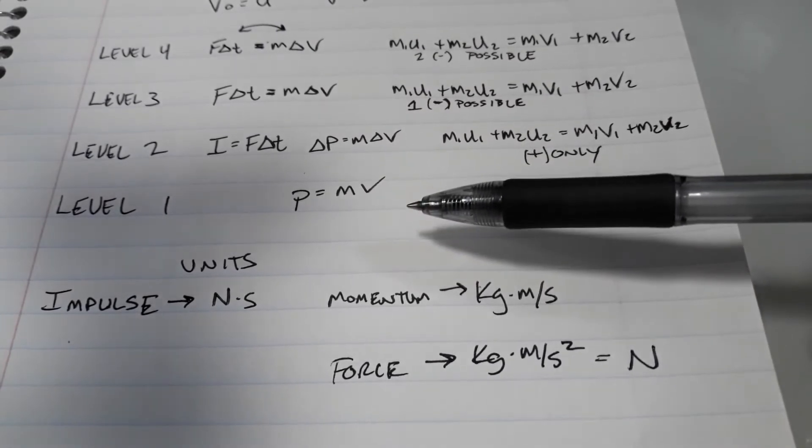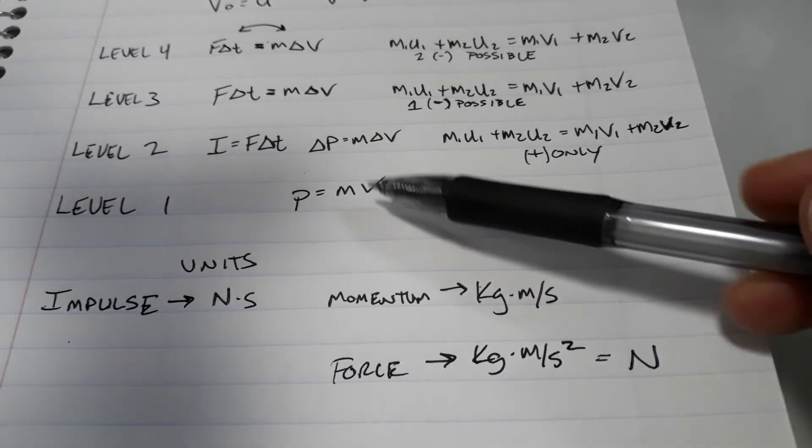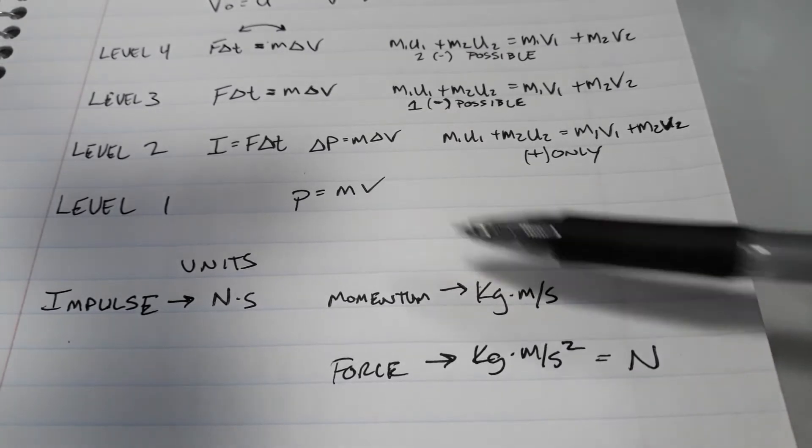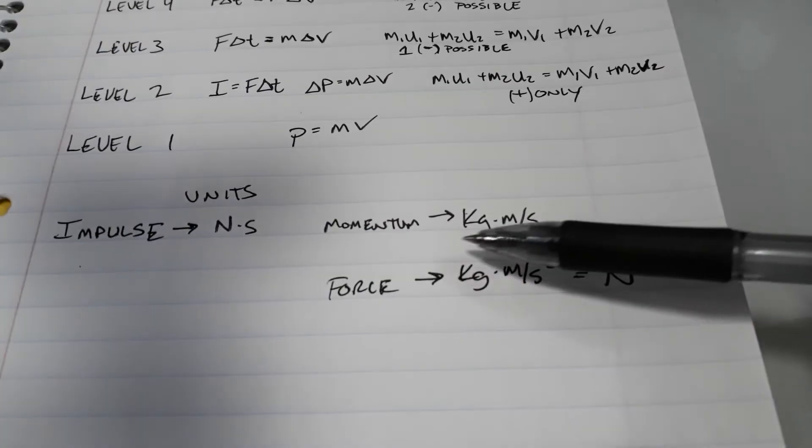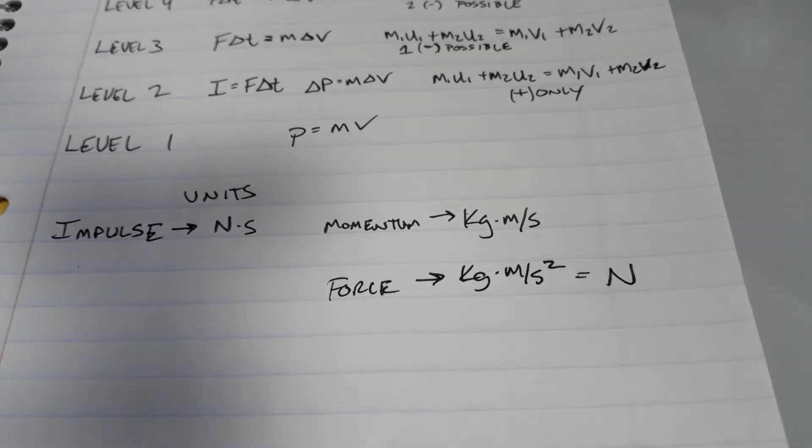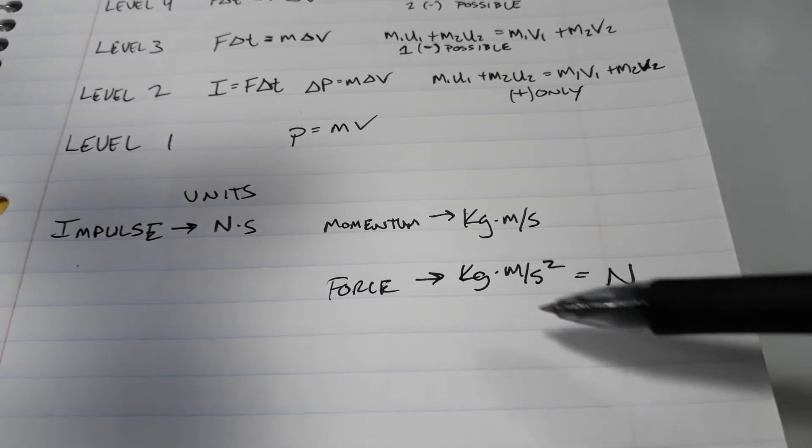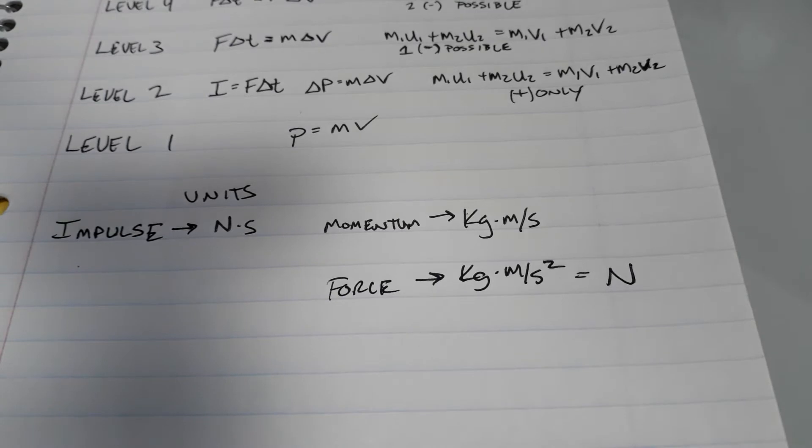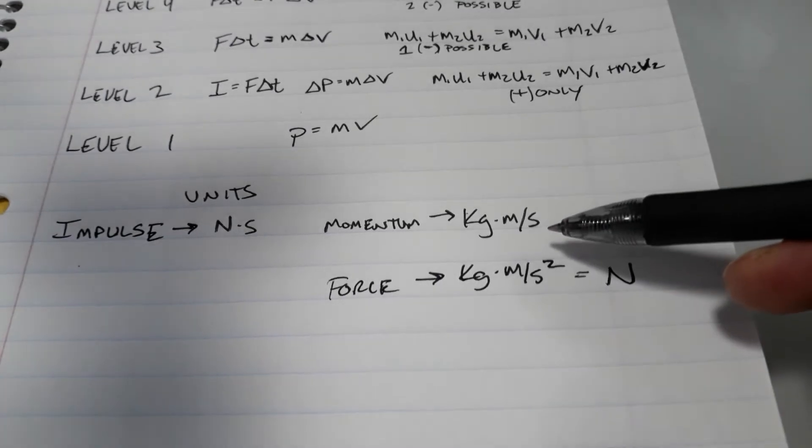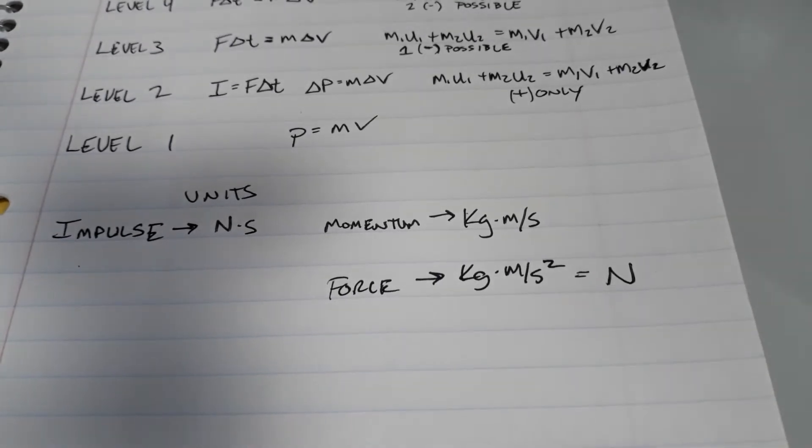Now, things you need to be aware of, the units. The units are mass times velocity, so that is kilogram meters per second. When we looked at forces, forces came out to be kilogram meters per second squared. That we gave a special name, called the Newton. For some reason, momentum doesn't get a special name. It's just kilogram meters per second.